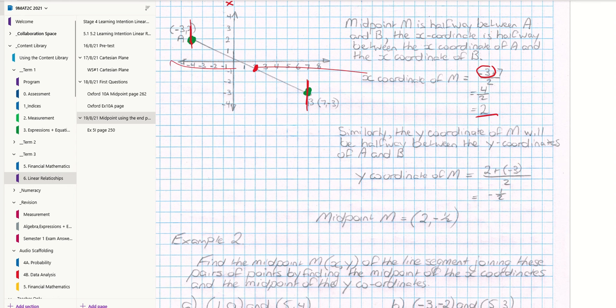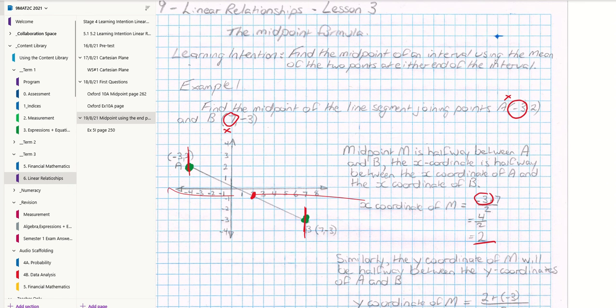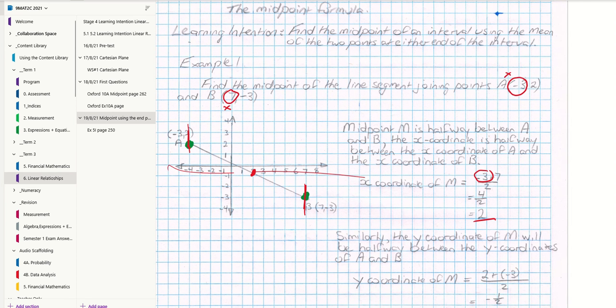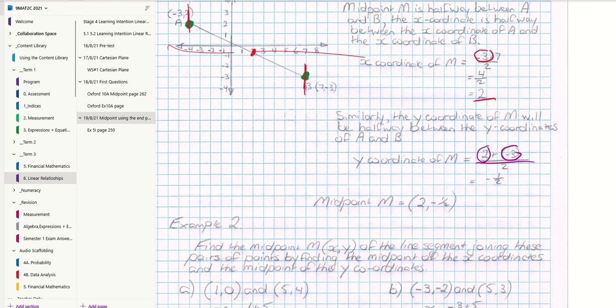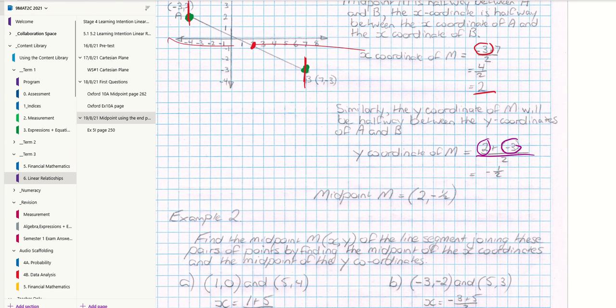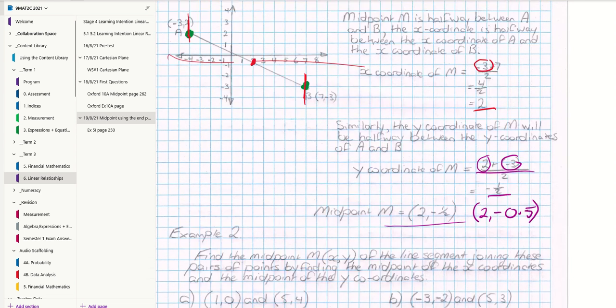So the Y coordinate of M will be halfway between the Y coordinates of A and B. Now my Y coordinate of A is the second one, is 2. There's my 2. And my Y coordinate of point B is minus 3. Add minus 3, and we're finding the point halfway between the average of them, so dividing by 2. 2 minus 3 is minus 1, divided by 2 is minus 1 half. So my midpoint is 2 and minus 1 half. Now you can also, if you want to, write that down as 2 and minus 0.5. It really is up to you. So that is my midpoint.